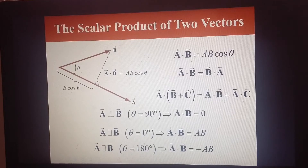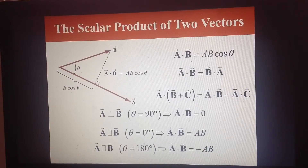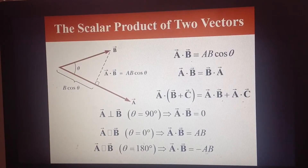If the angle between the two vectors is equal to 180 degrees, then the cosine of 180 degrees is negative one, so the dot product of a and b is going to be negative the magnitude of a times the magnitude of b.